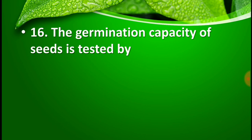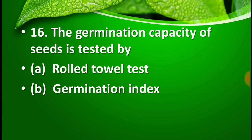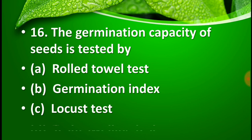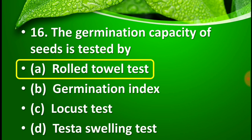Question number 16: The germination capacity of seed is tested by — option A: roll towel test, option B: germination index, option C: locust test, and option D: testa swelling test. You may pause the video to think about the right answer. The right answer for this question is option A: roll towel test. The germination capacity of seed is tested by using the roll towel test.